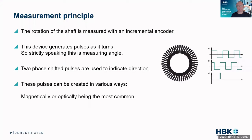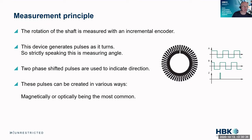The speed measurement principle is typically an encoder, which gives you pulses as it turns. Strictly speaking, it's measuring angle, not speed — it gives you a pulse per degree. You typically have two phase-shifted pulses which can be used to detect the direction of rotation, and you can create them in various ways: magnetically or optically.